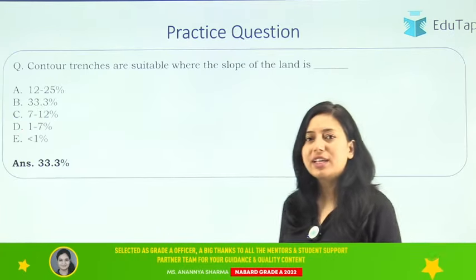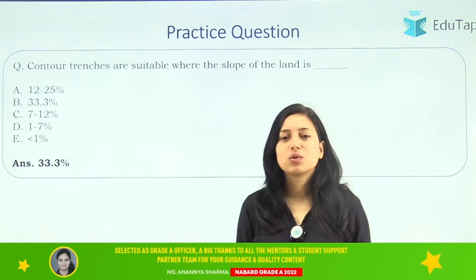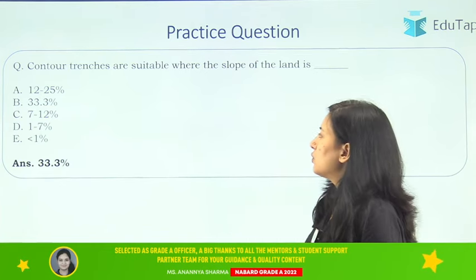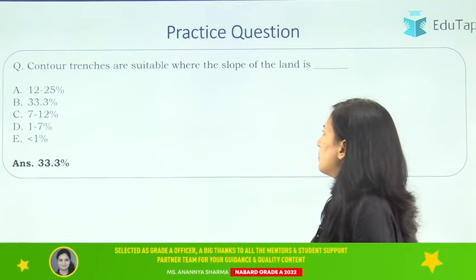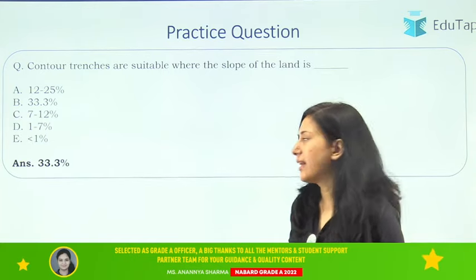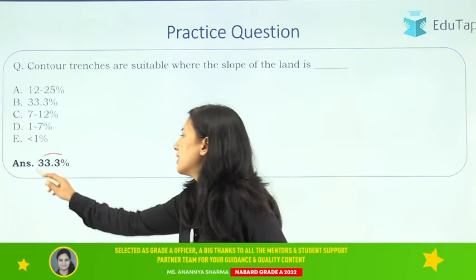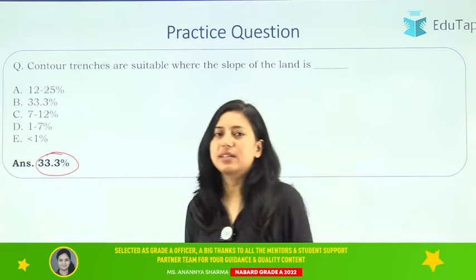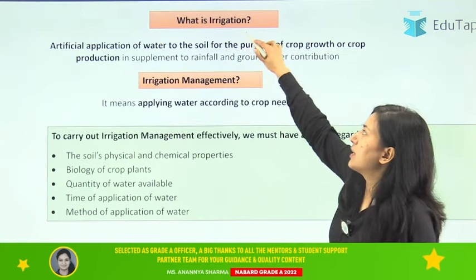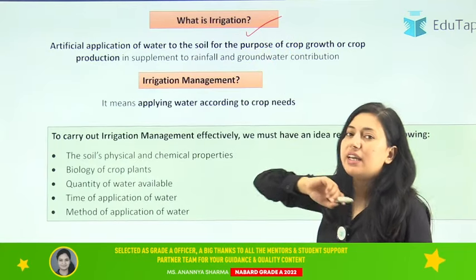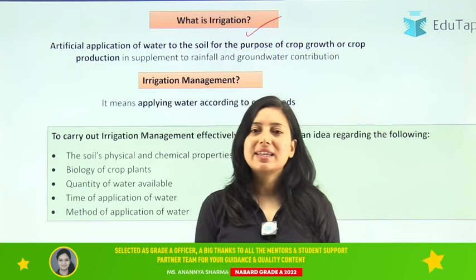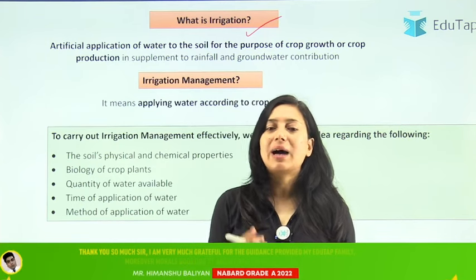Before starting today's video, let me answer the question from the previous video: contour trenches are suitable where the slope of land is — the right answer is 33 percent. Now moving on to today's topic, that is irrigation.